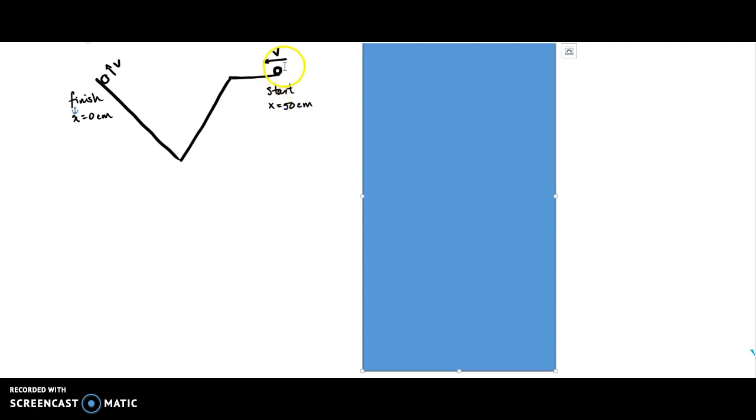So, we've got a small object that's moving this way with a velocity. It's starting at a position of 50 centimeters. It will then go across here, roll down the hill, then roll up the hill. By the time it reaches its finishing point, it's going to be at a position of 0 centimeters, and it's going to still be moving.